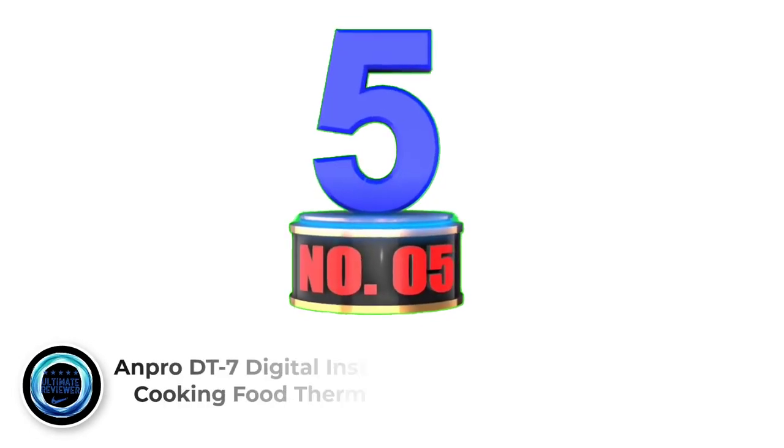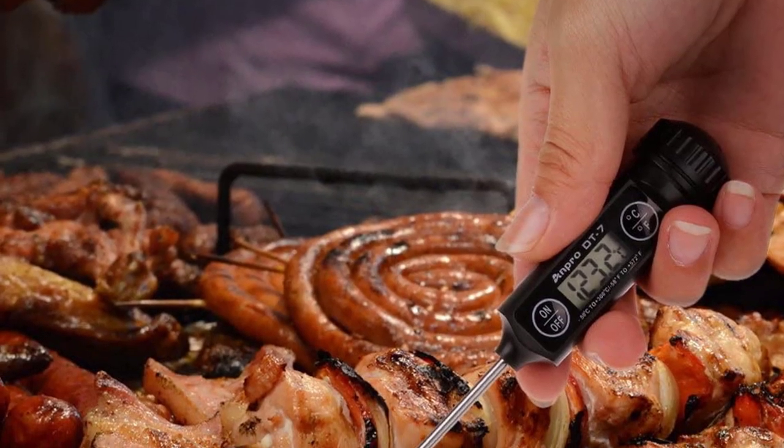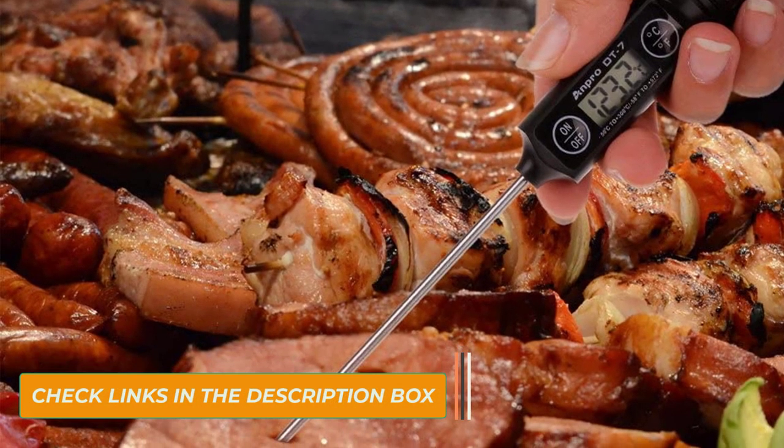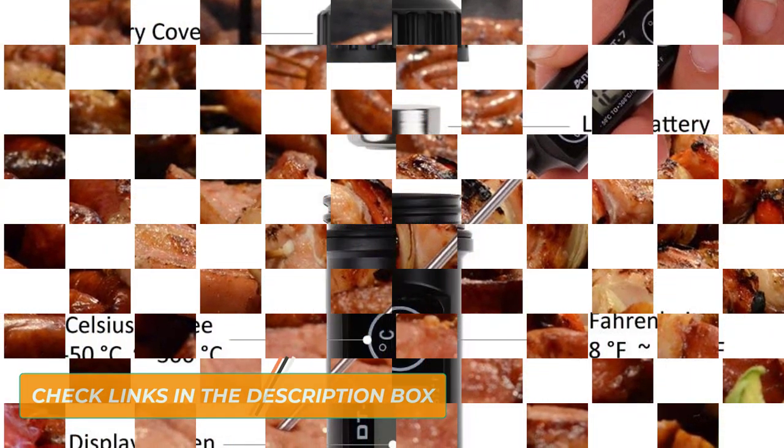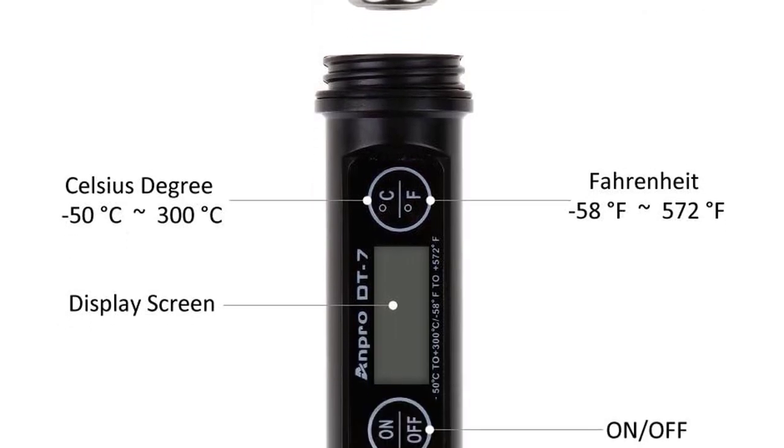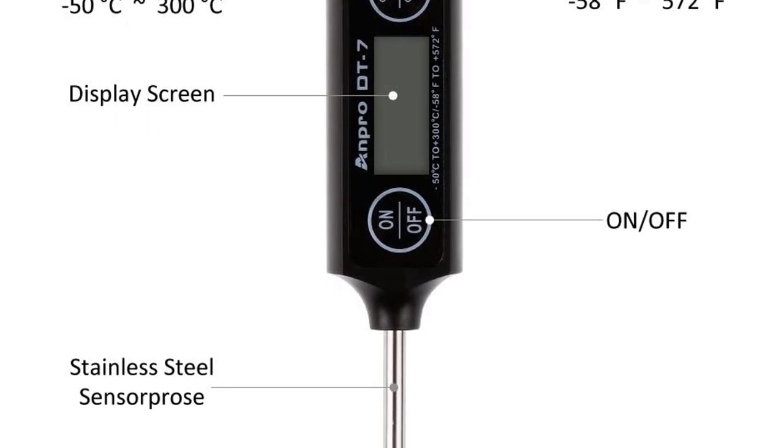Number 5: Anpro DT7 Digital Instant Treat Cooking Food Thermometer. When your candy is boiling hot, the last thing you want is to have to get too close to it. While it is necessary to get an accurate reading, sweet chefs will also want to be able to keep their distance. Fortunately, Anpro has created a candy thermometer that comes with an extra long probe. The stainless steel construction is capable of handling temperatures up to 400 degrees Fahrenheit.